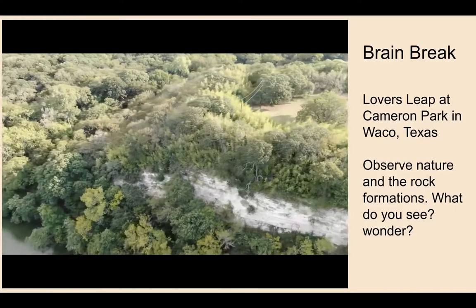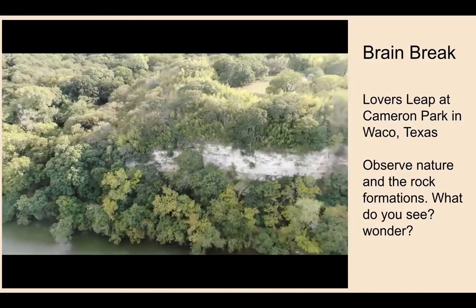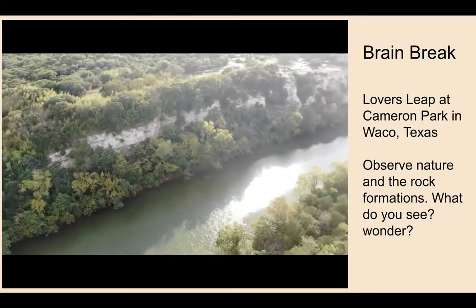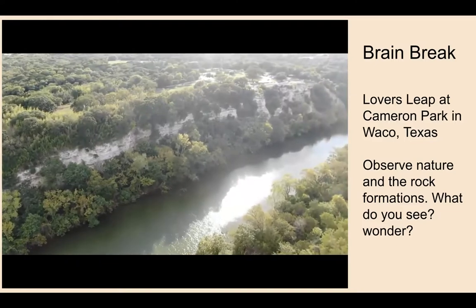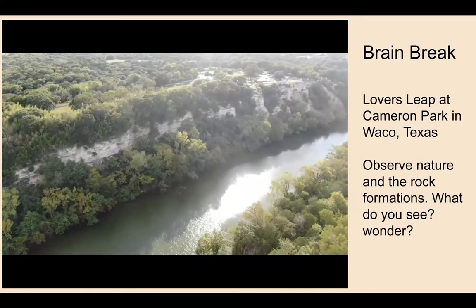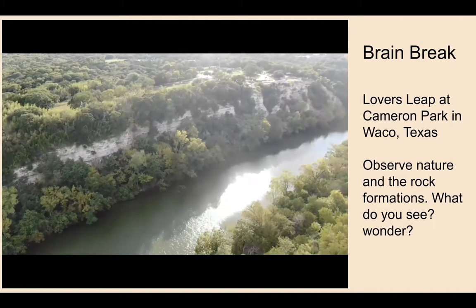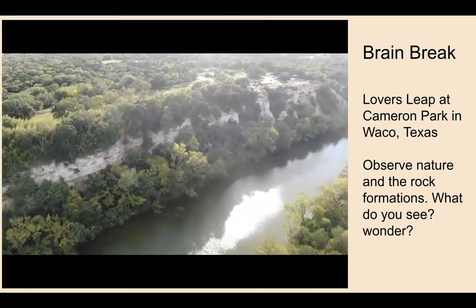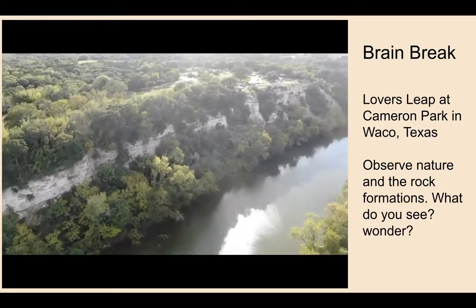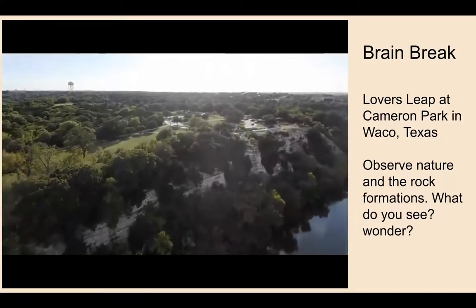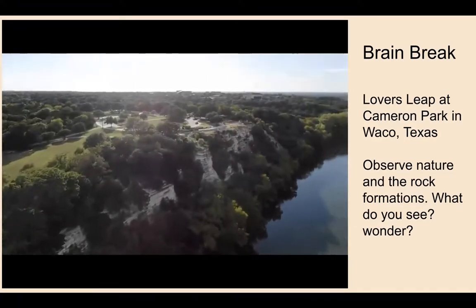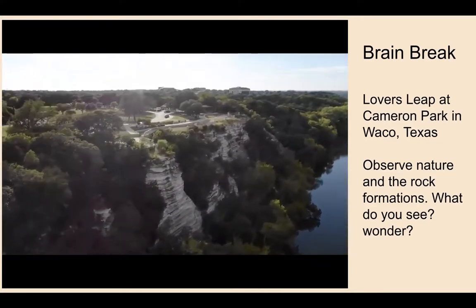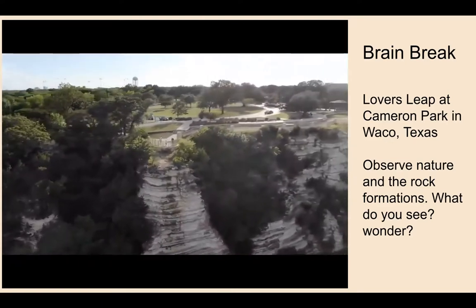The story behind 'Lover's Leap' is that a Native American woman named Wawat secretly accepted a marriage proposal from a handsome Apache warrior. They were from enemy tribes, and when they were caught by her father and brother, instead of being apart forever, they decided to leap off the cliff. That's how it got the name Lover's Leap. It really is an interesting rock formation where you can clearly see the horizontal strata.